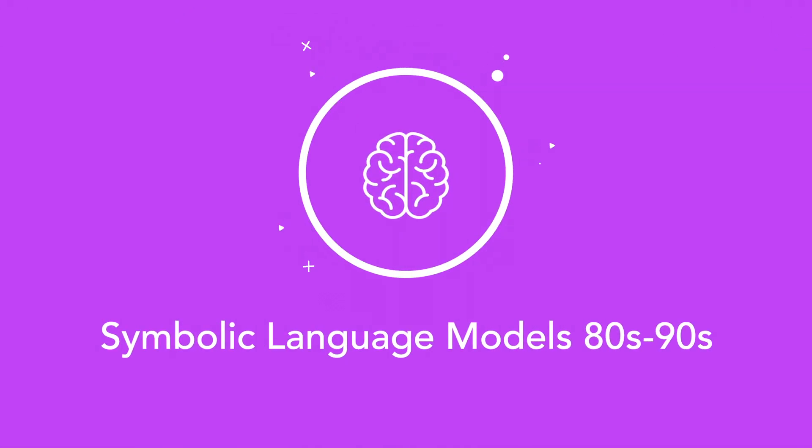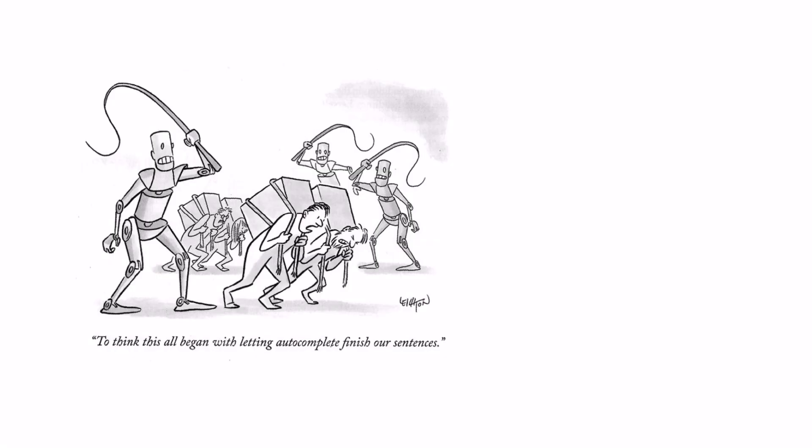This fun cartoon from New Yorker is a good reflection of what large language models do at a high level in that they are just next word predictors on steroids, but in order to predict the next word you need to understand language. Here's why.